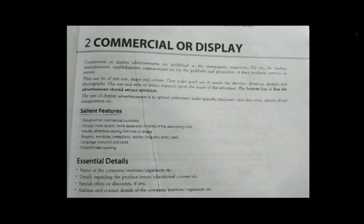After that, I would like to talk about essential details. It has some essential details. First, name of the company, institute, organizers, etc. Second, details regarding the product, event, or educational courses. Third, special offers or discounts, if any. Fourth, address and contact details of the company, institute, and organizers. Students are advised to do some exercises based on both topics in the notebook.